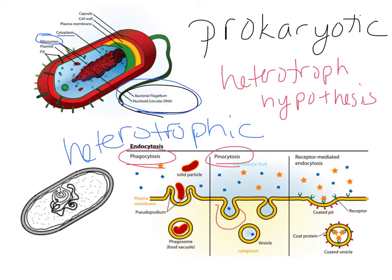Or receptor-mediated endocytosis, where the molecule has to match with a receptor, and if it matches it can be taken into the cell. All of those are different ways that this prokaryote could be heterotrophic — taking in food so that it could then produce ATP from that food.